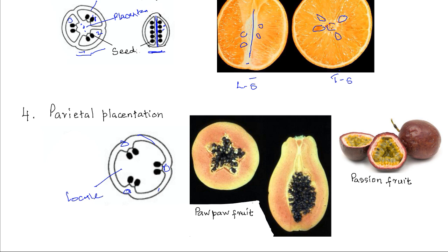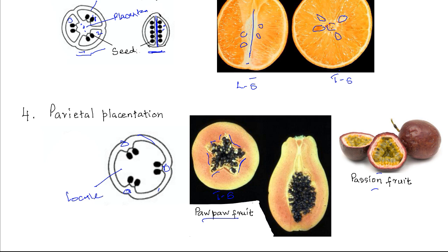Examples of fruits with parietal placentation include the papaya fruit and the passion fruit. In the papaya fruit, you can see the placenta where the seeds are attached on the sides. This is shown in transverse section and longitudinal section. The parietal arrangement is most clearly shown in the transverse section. In passion fruit as well, the seeds attach to the placenta on the sides. That is parietal placentation.